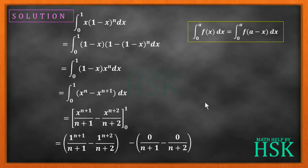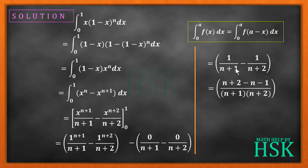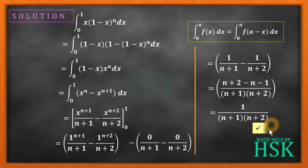This gives me 1 upon n plus 1 minus 1 upon n plus 2. This whole term will become 0, so no need to bother about this term. On taking LCM, this will be equal to n plus 1 into n plus 2, and this will be equal to n plus 2 minus n minus 1. This n and n cancels out, this is going to be 1 upon (n plus 1) into (n plus 2), which is my required answer.